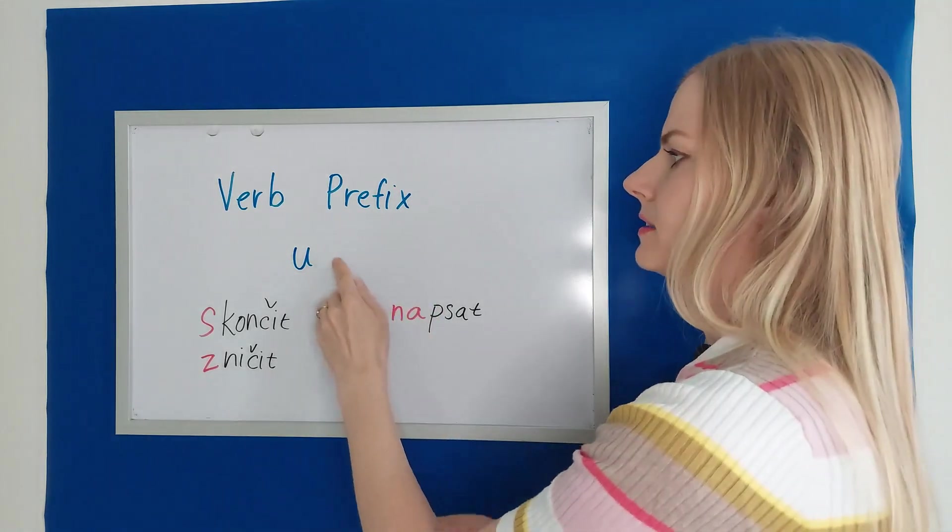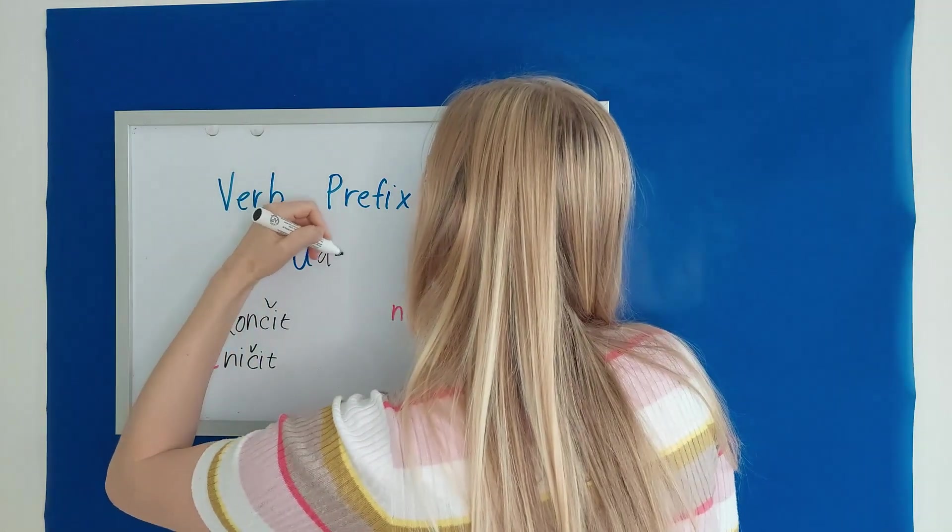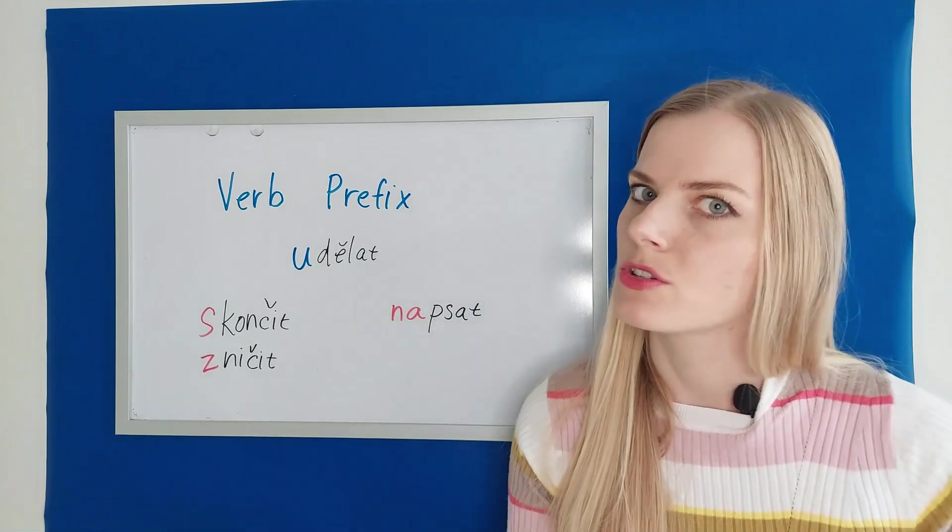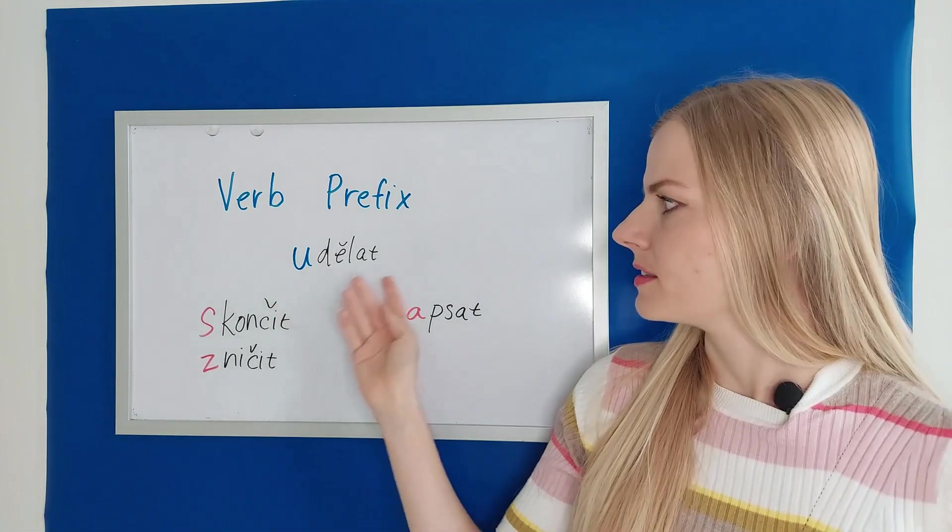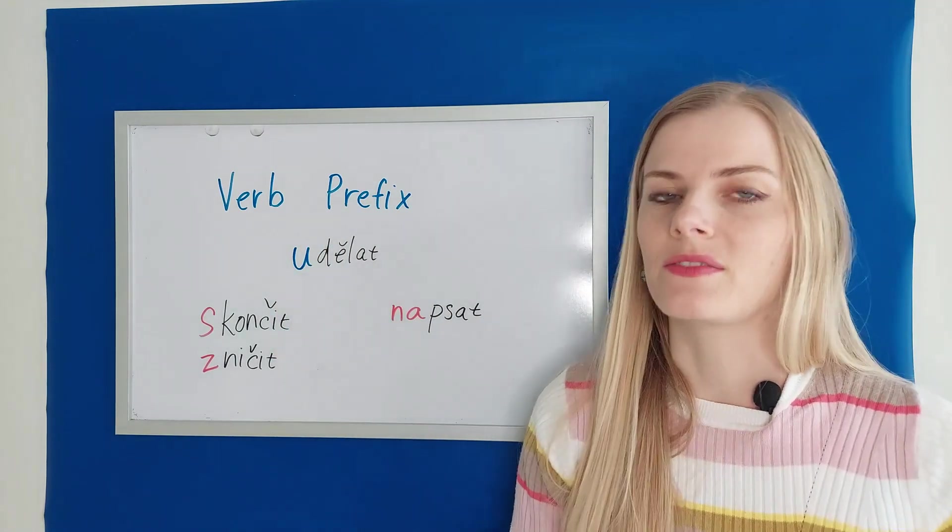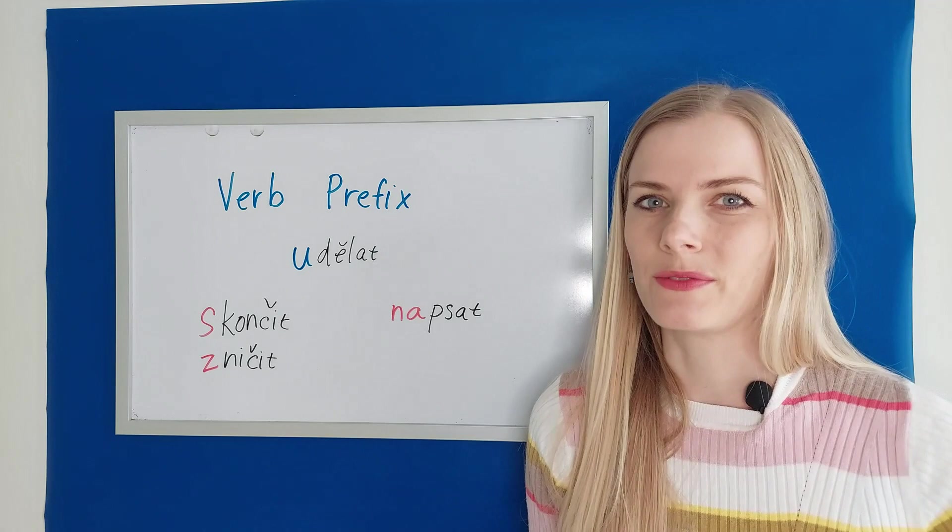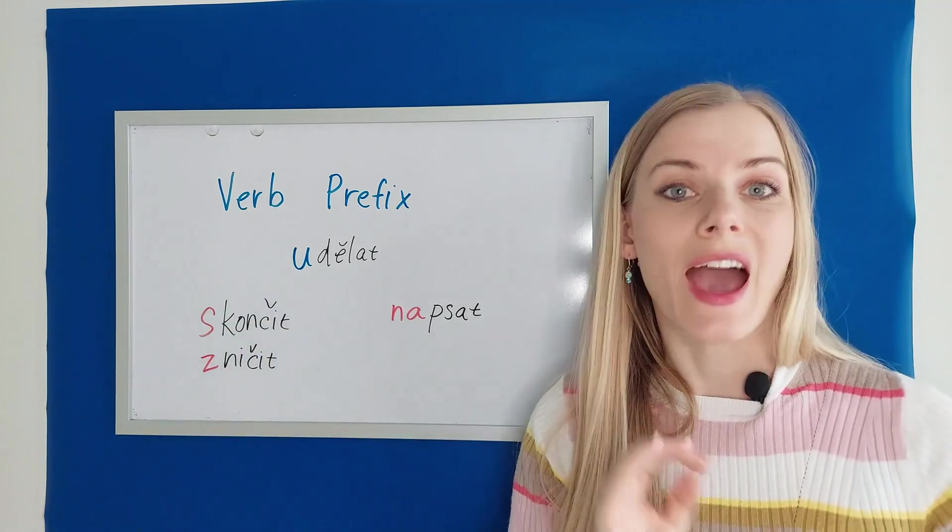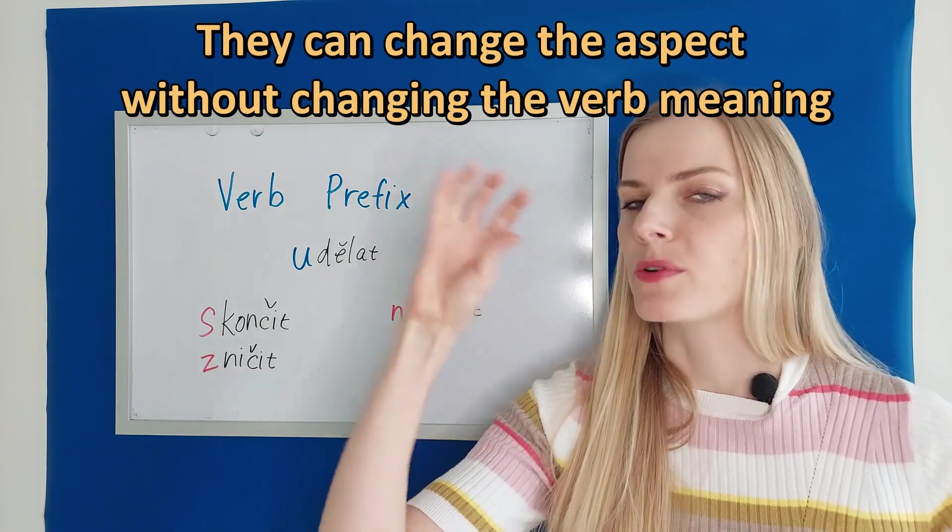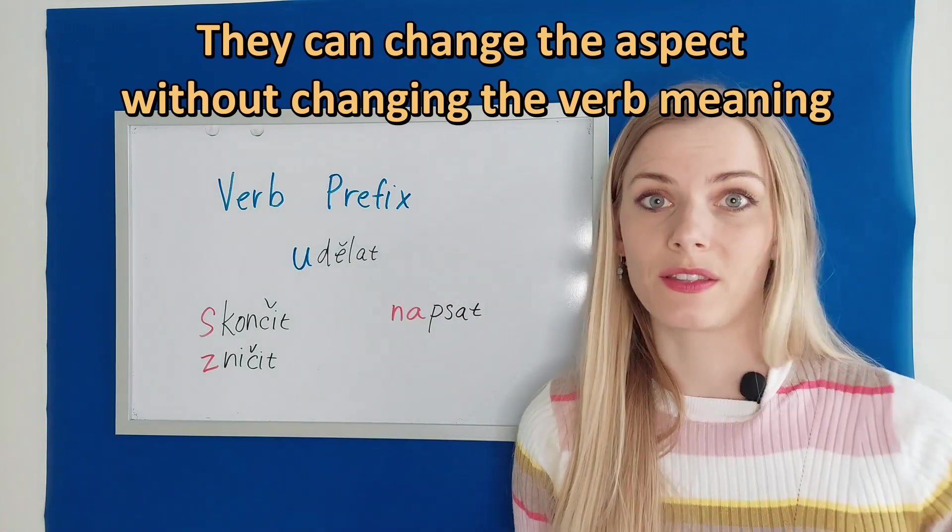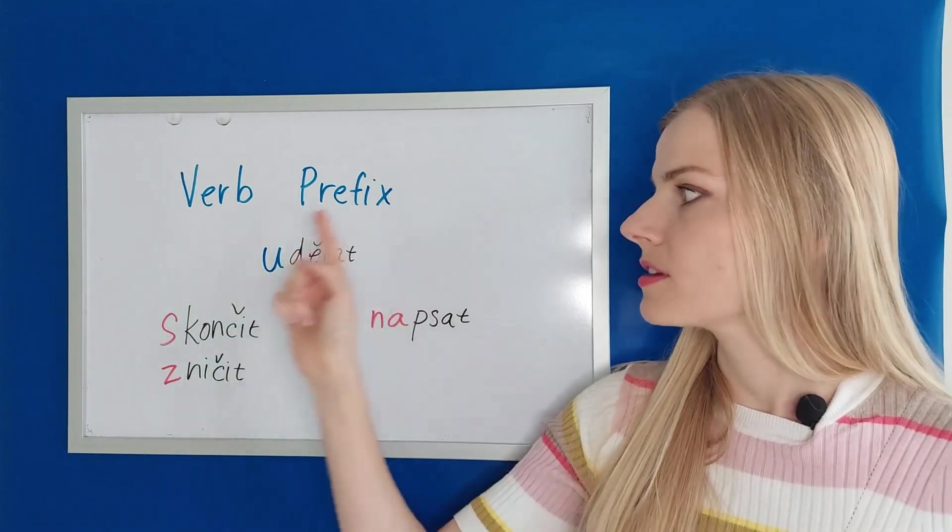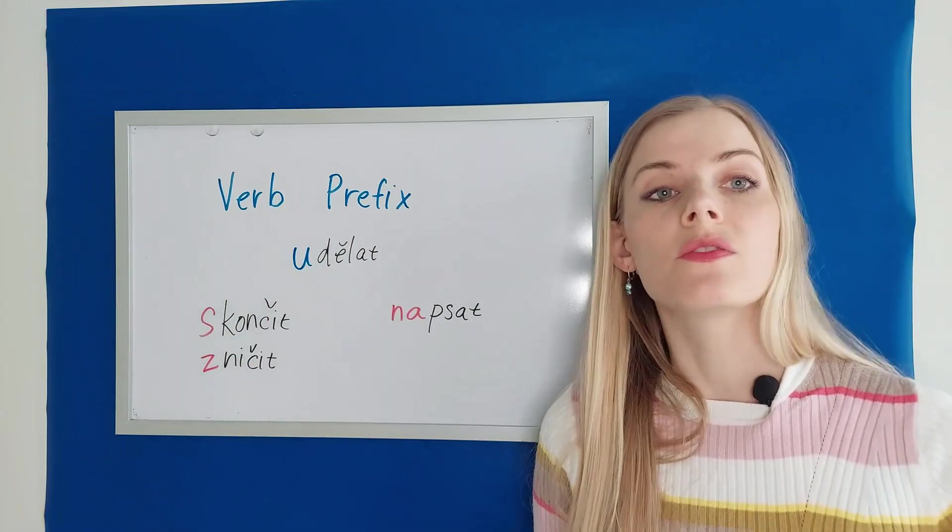Now U does exactly the same thing. For example, dělat and udělat. Dělat to do or make and udělat to finish doing or making something. These prefixes change the aspect of the verb. The aspect means whether the verb is perfective or imperfective. But in this episode we are going to focus our attention on the prefix U.